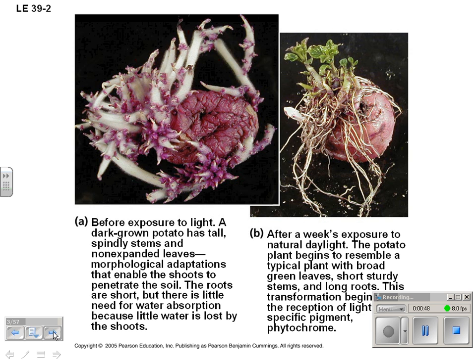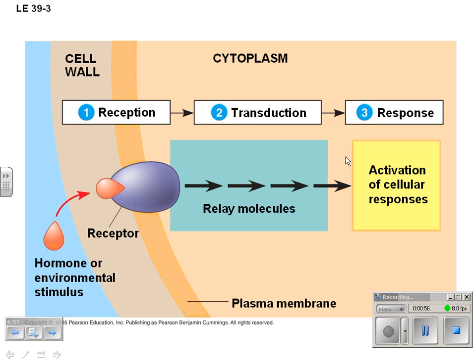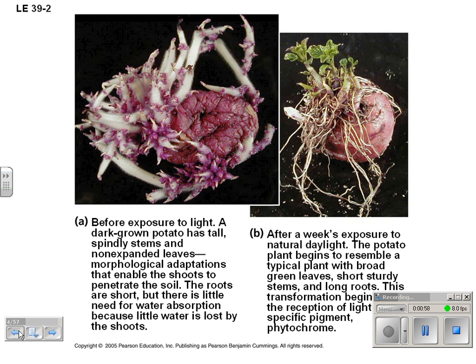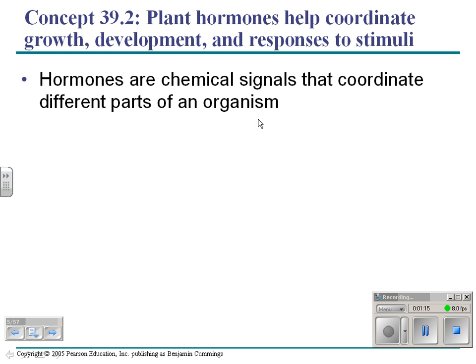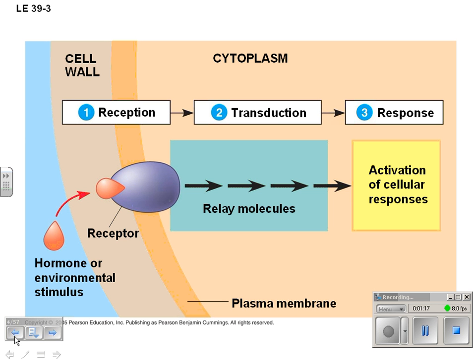Since plants don't really have a brain, how do they know? Here's this plant on the right that has been exposed to natural daylight — it's starting to grow leaves. But before that, the plant doesn't really have any idea where the light is. Just a quick review: remember that there are three steps to hormone response — reception, transduction, and response.